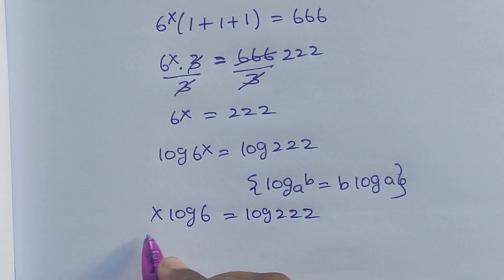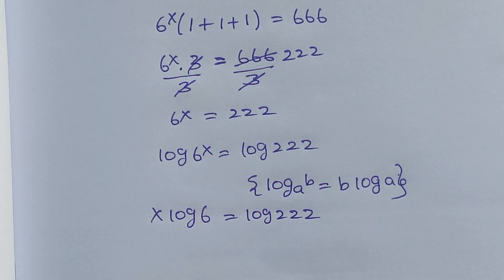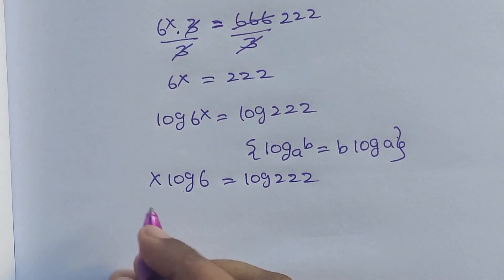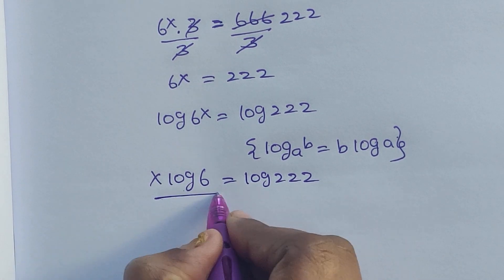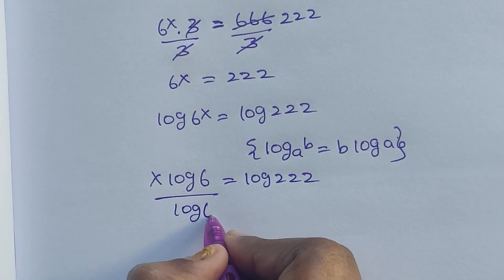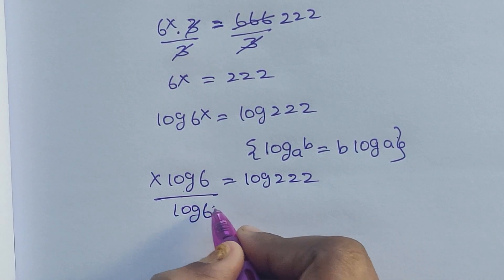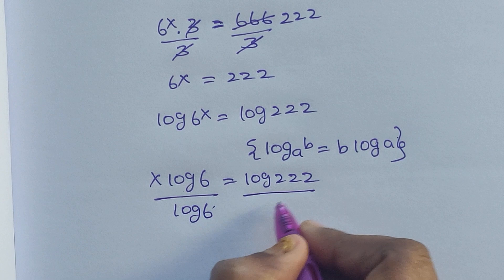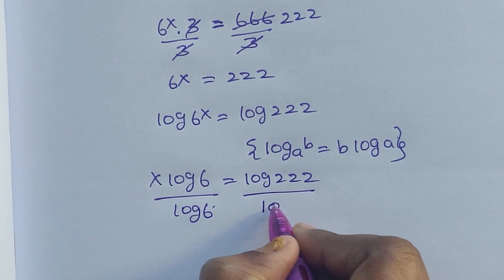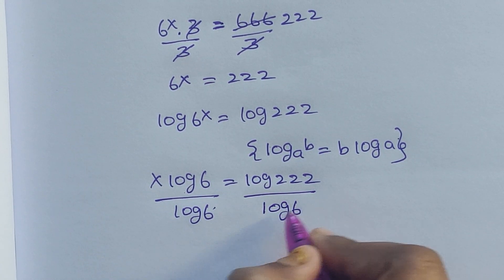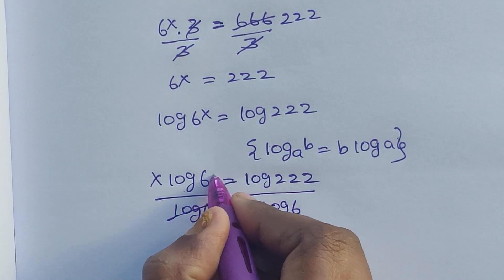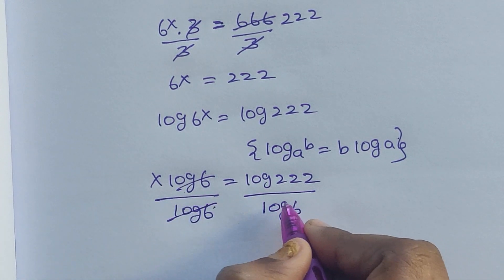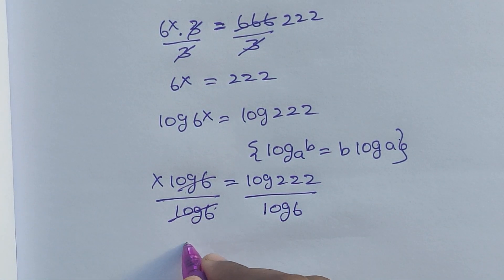Here I'm dividing both sides by log six. Log six divided by log six get cancelled, so x equals log 222 divided by log six.